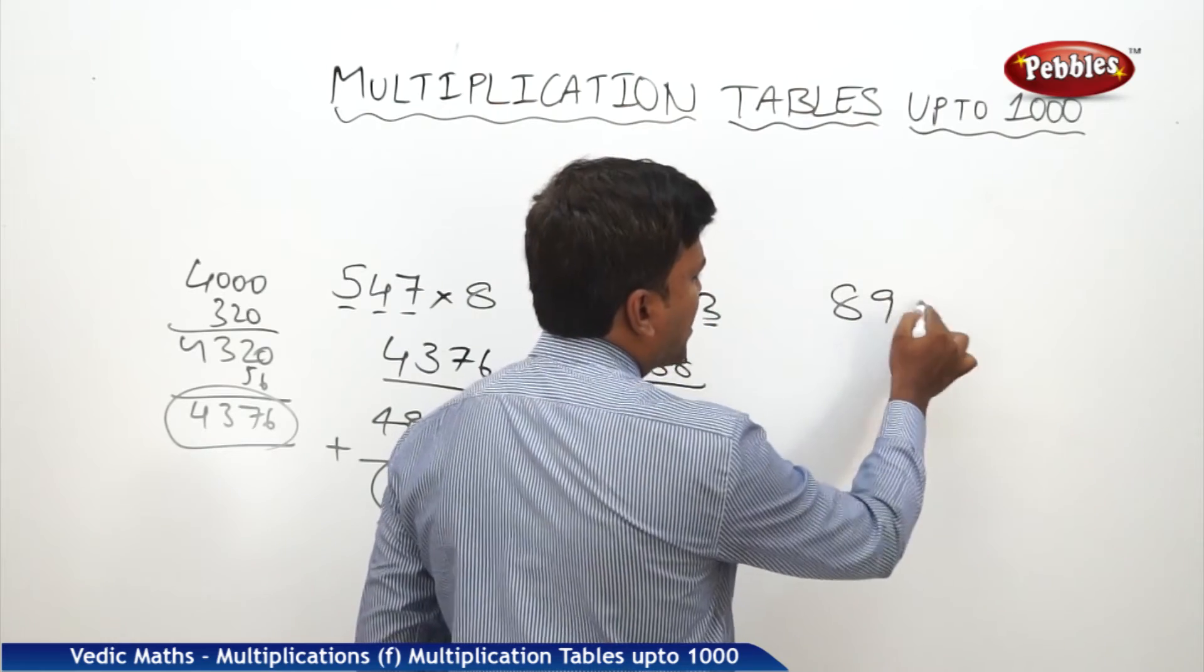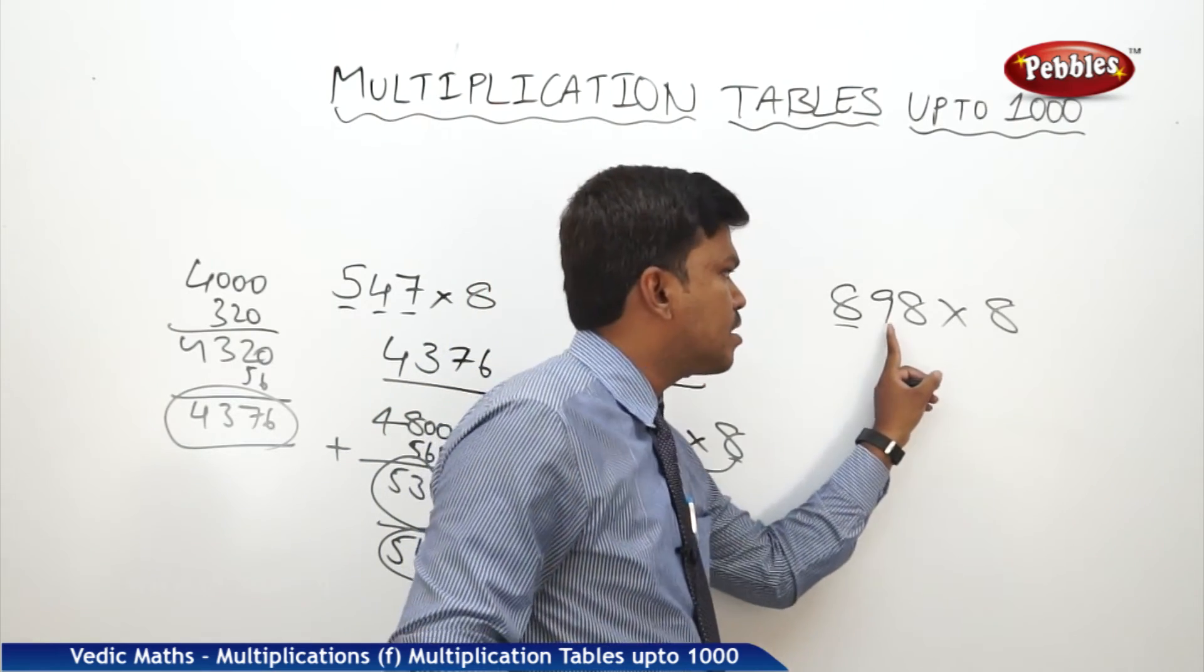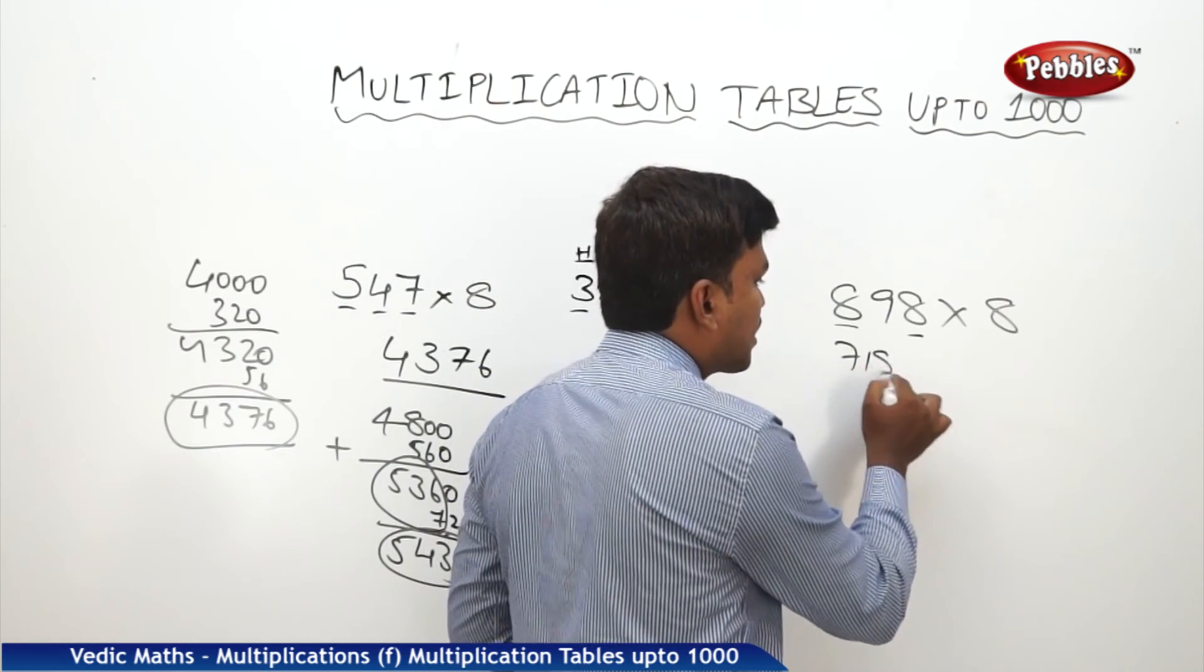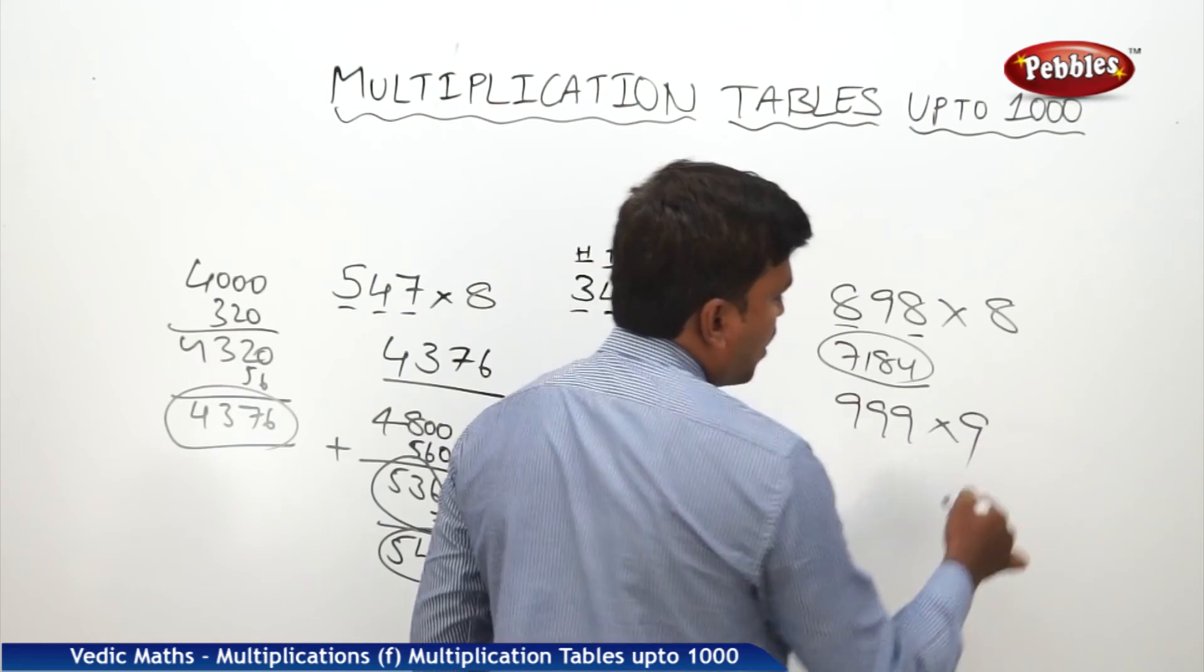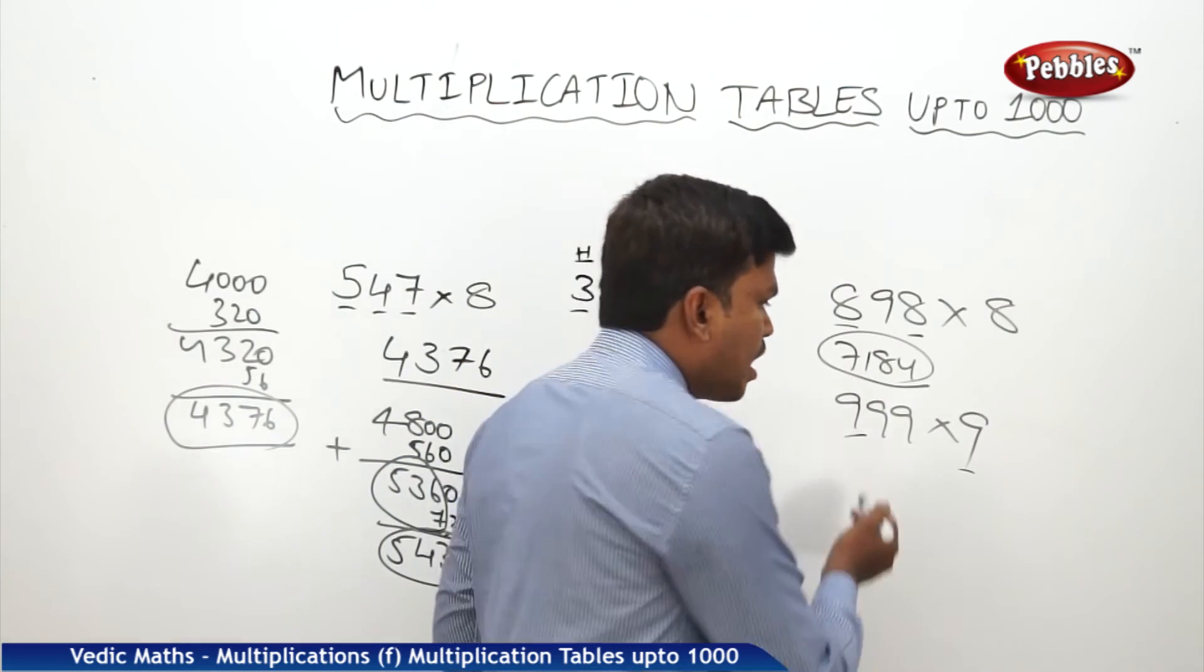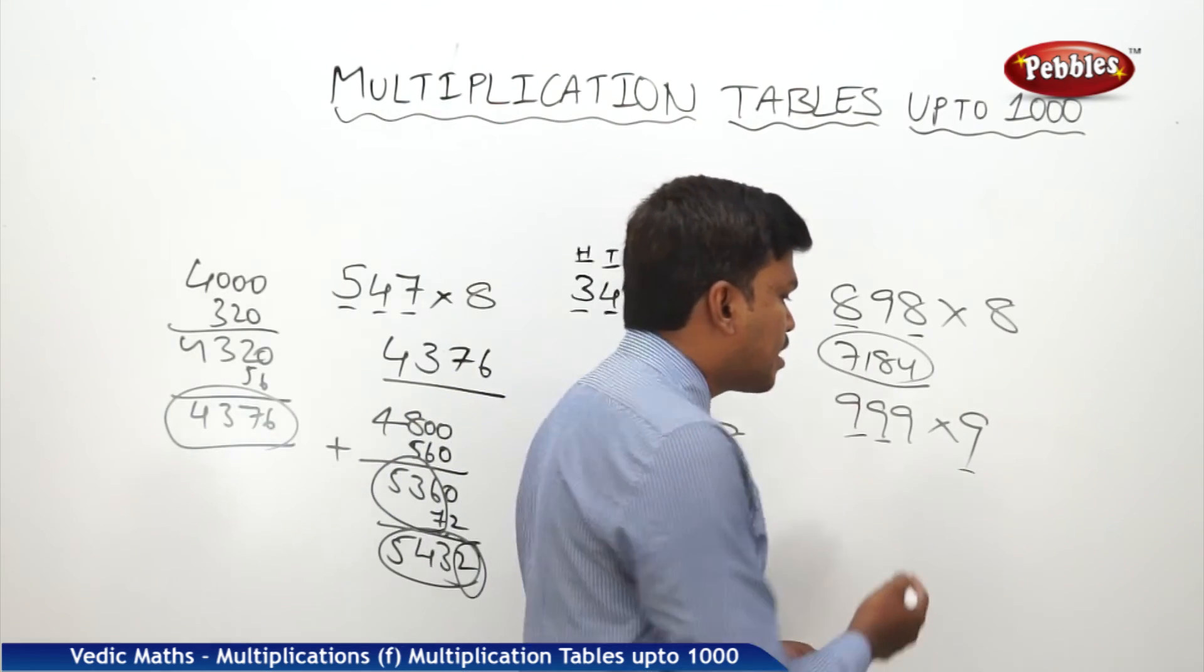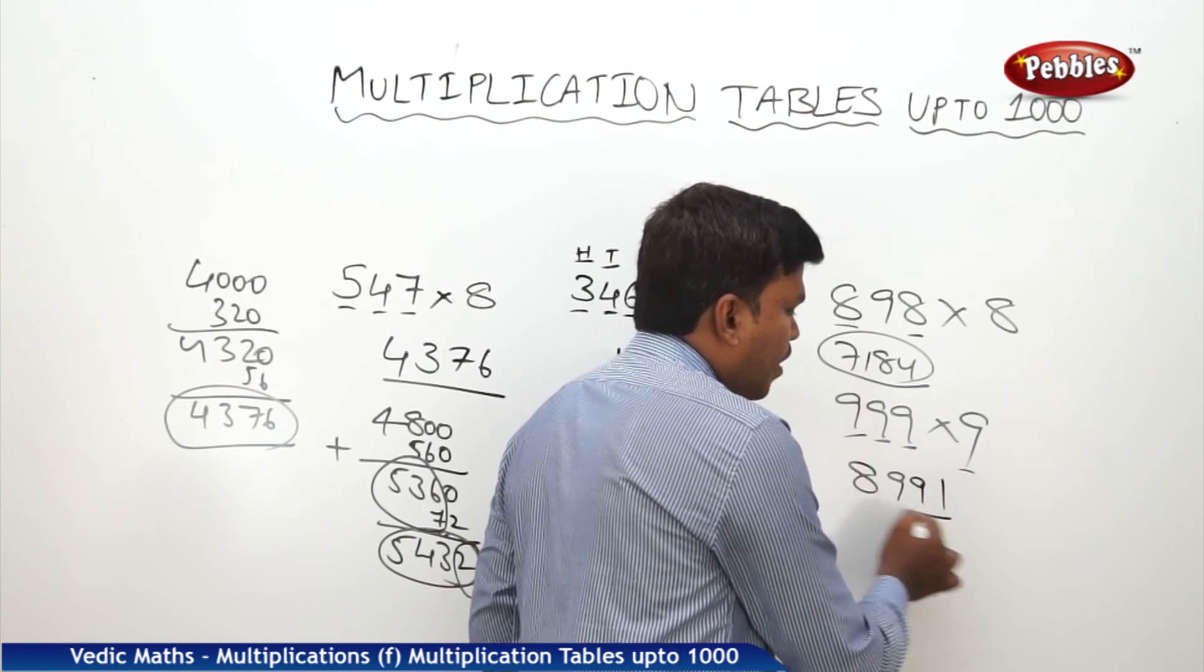Even similarly, say some big number like 898 into 8. 6400, come with me, say along with me. 6400 plus 720. 6400 plus 720 is 7120. 7120 plus 64 is 7184. Similarly, 999 into 9. This time you tell me the same way. 8100 in the mind. 8100 plus 810 is 8910. 8910 plus 81 is 8991. This will be your answer.